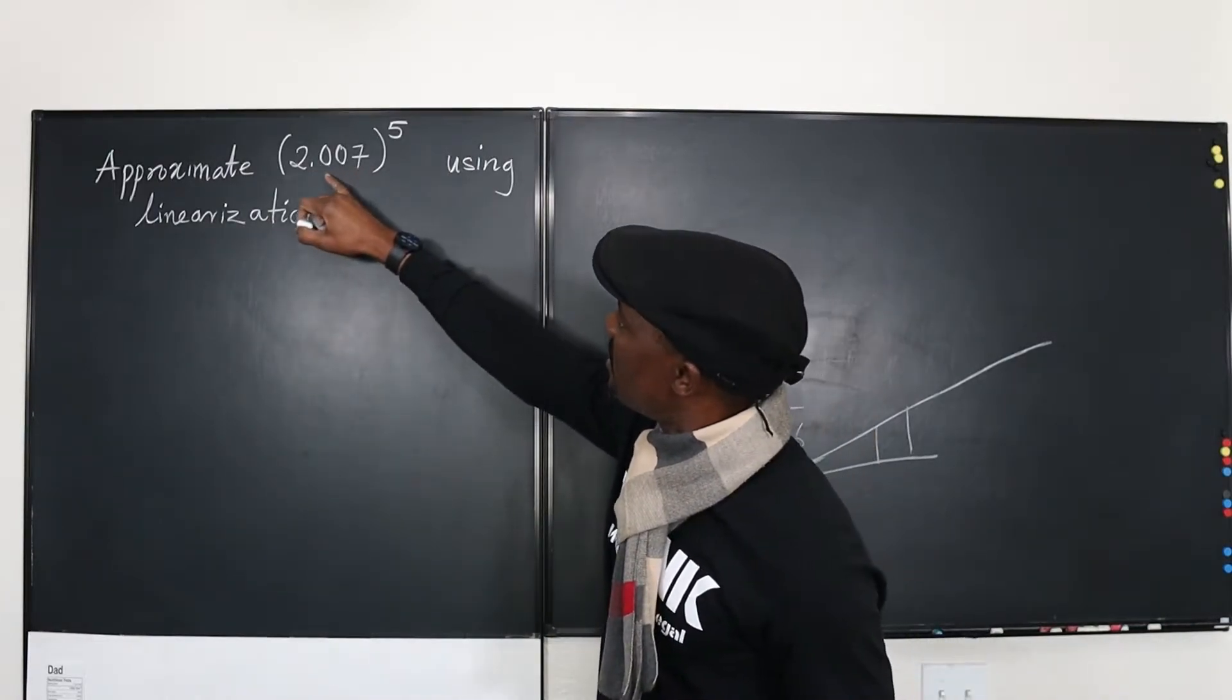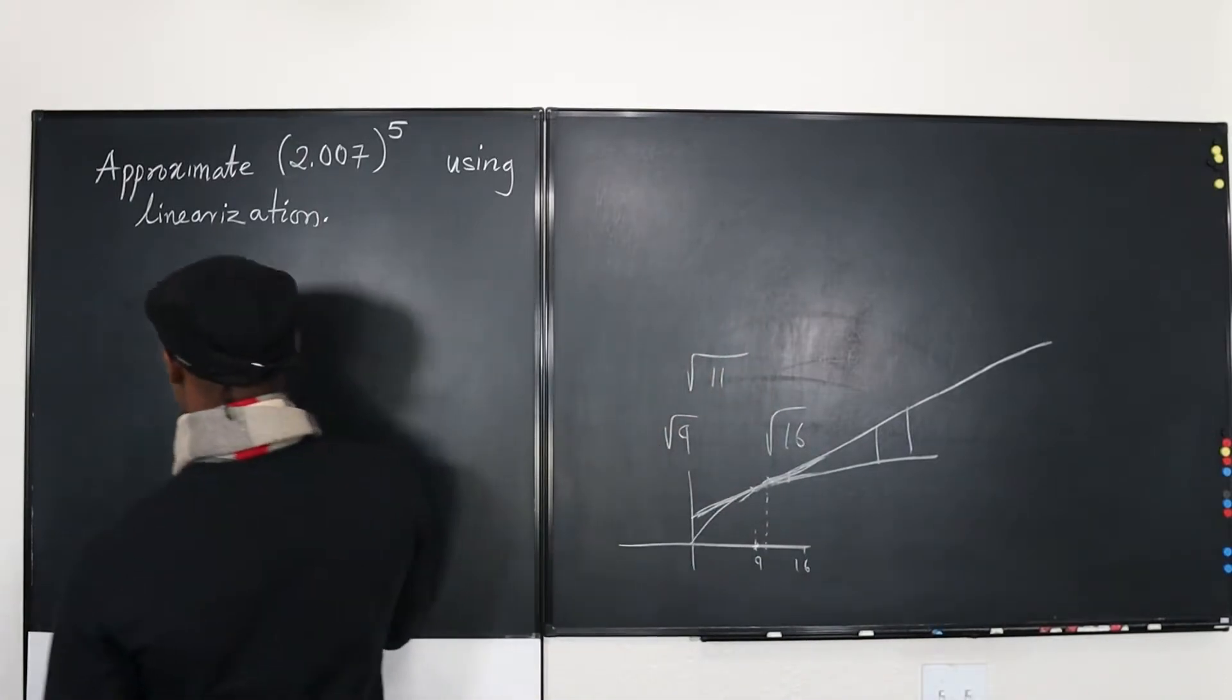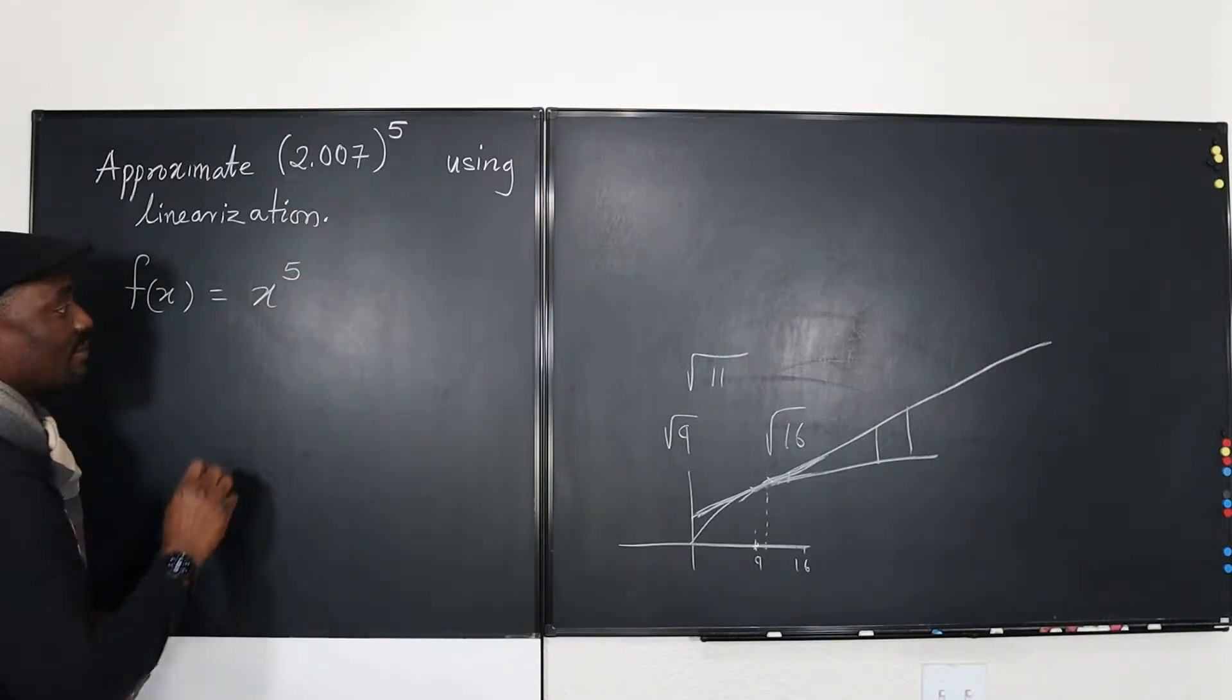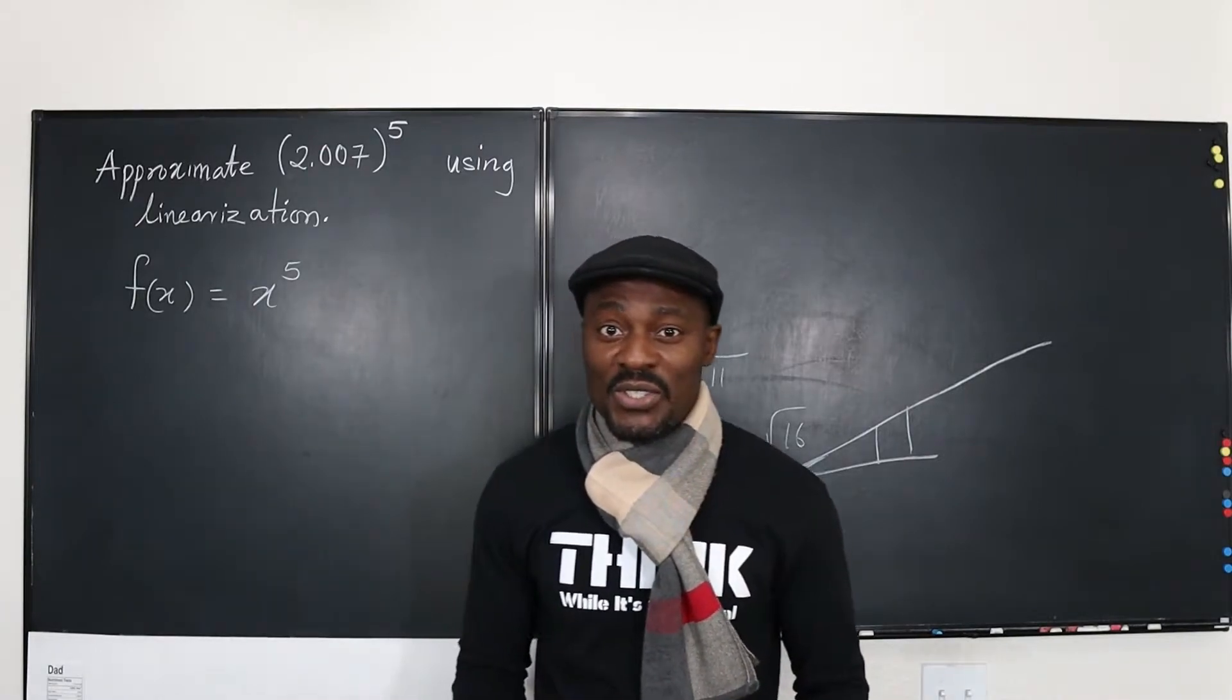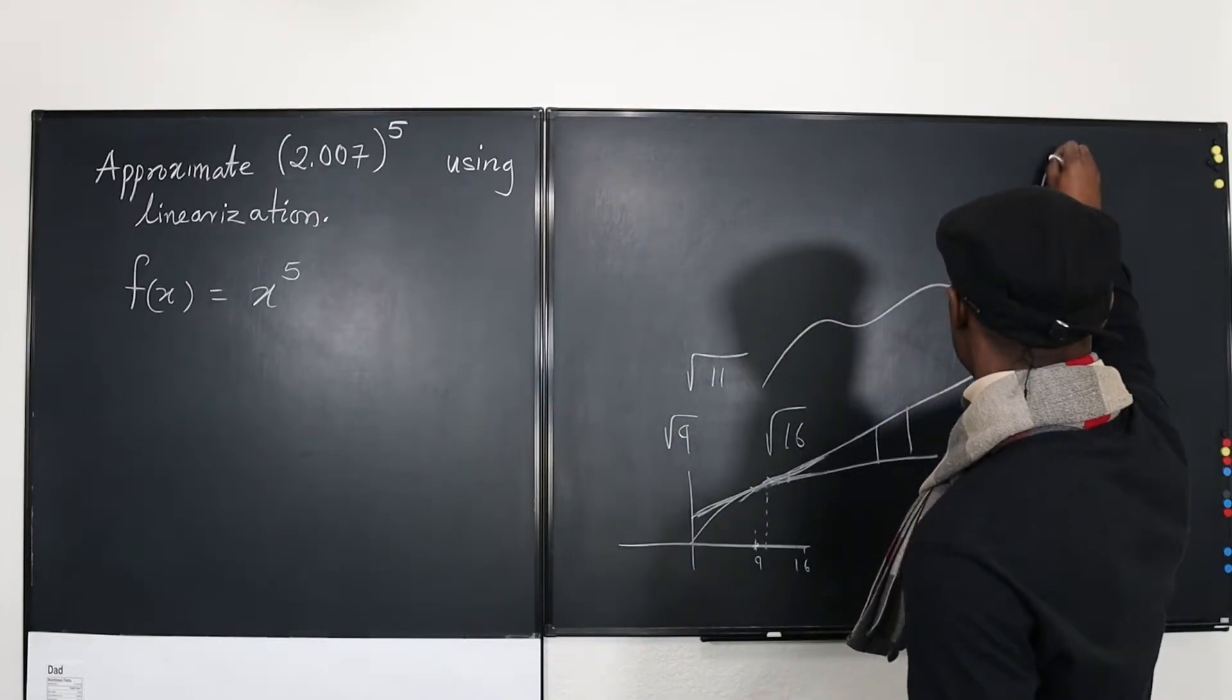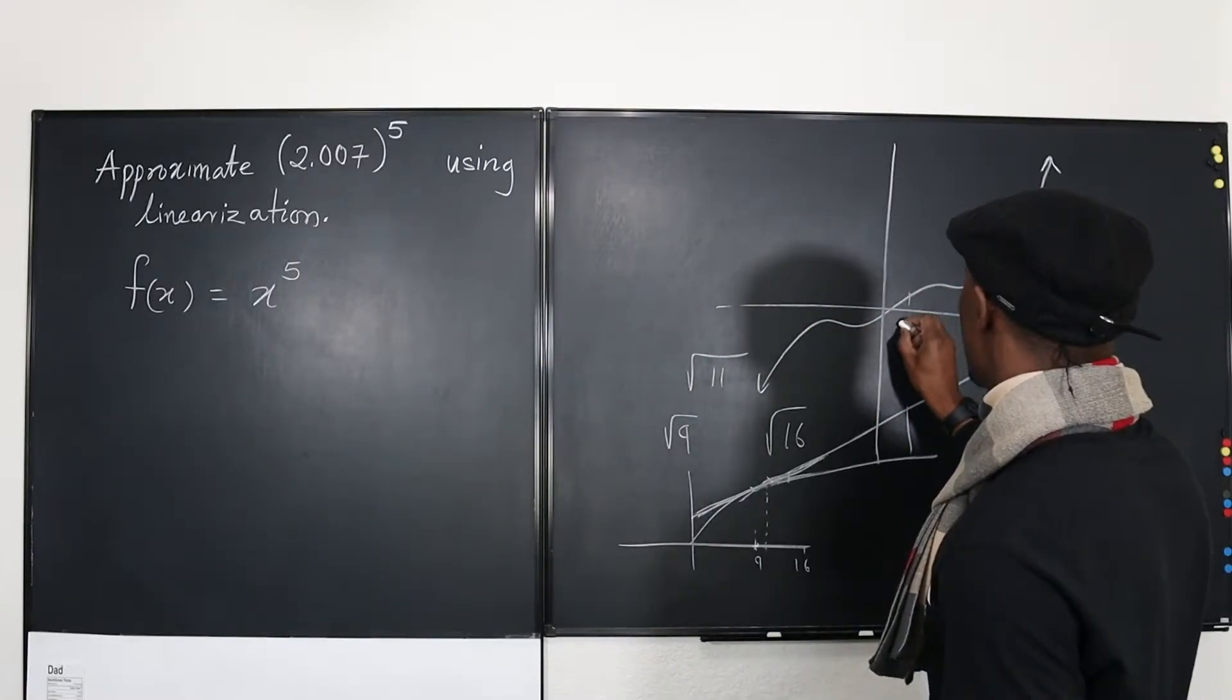So the first thing you want to ask yourself is what function will I be using for linearization? Well, this is something raised to power five. So in order to start this, just tell yourself, I'm going to choose a function f(x) equals x raised to power five. So the next question you're going to ask yourself is, I need a point.